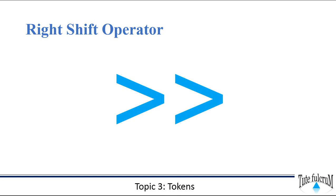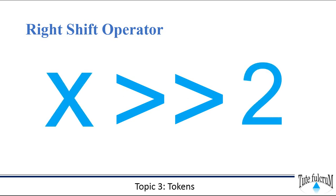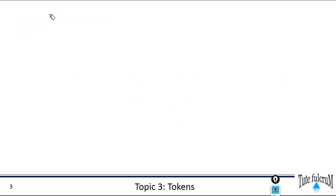The right shift operator shifts all bits towards the right by a certain number of specified bits. For example, X right shifted by two indicates that the operand X will be shifted two bits to the right. Let's take an example and understand this — we'll take X right shift by two bits and let X equal six.